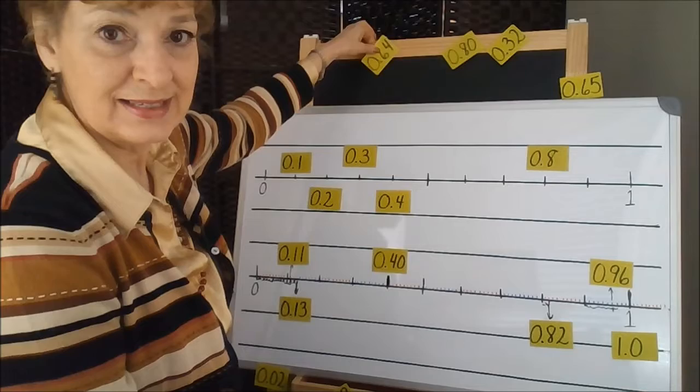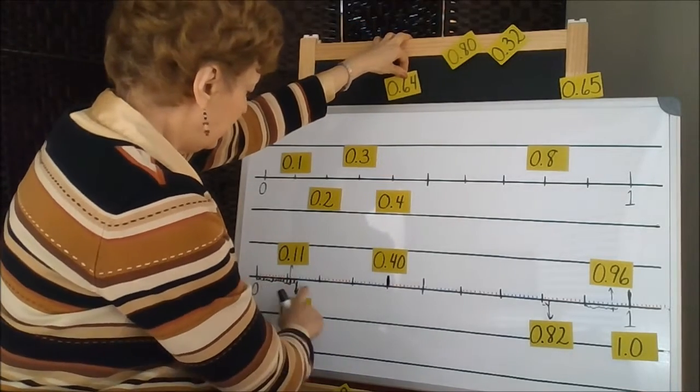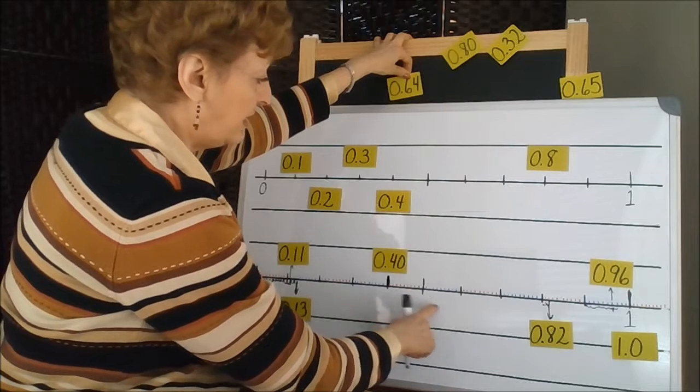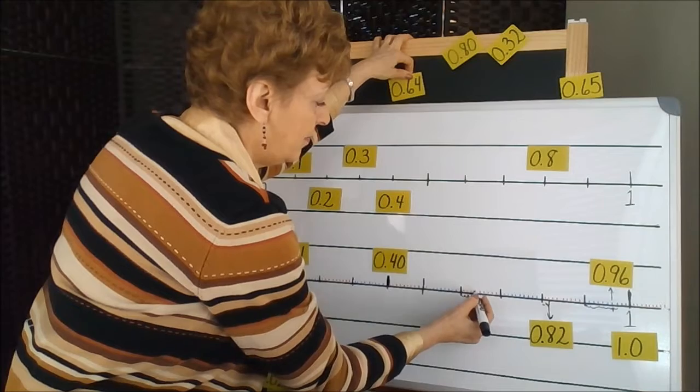Placing 64 hundredths: 10, 20, 30, 40, 50, 60, 61, 62, 63, 64.